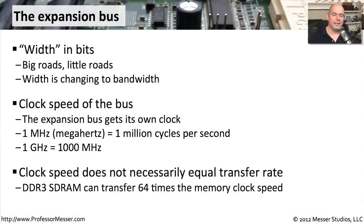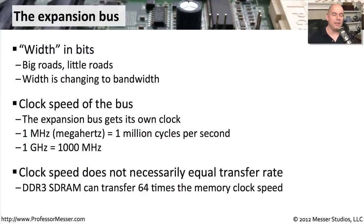Another important consideration is that the speed of the bus does not necessarily correlate back to exactly how much data we're putting across that connection. In many cases, we can put a lot of data over a connection in one single clock cycle. Something like DDR3 transfers data at 64 times the rate of the memory clock, because it's able to transfer data in different ways for a single clock across that link. So when looking at the bus speed, don't think that the speed itself limits the amount of data — in some cases we can put a lot of data across that bus in one single clock cycle.